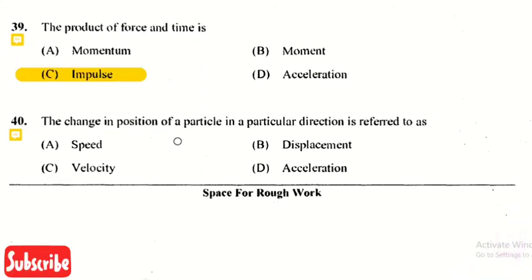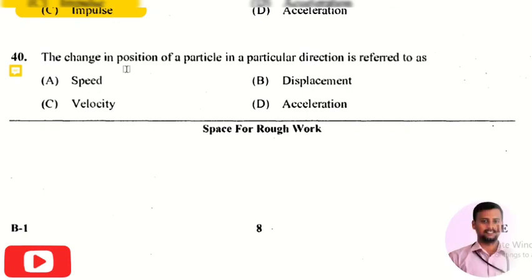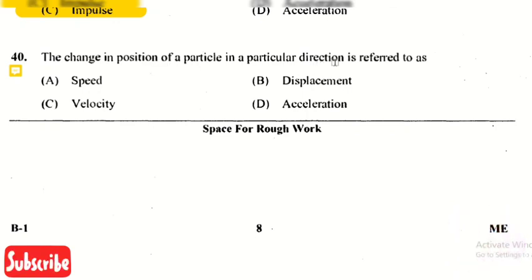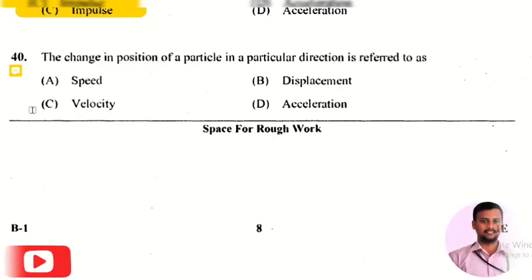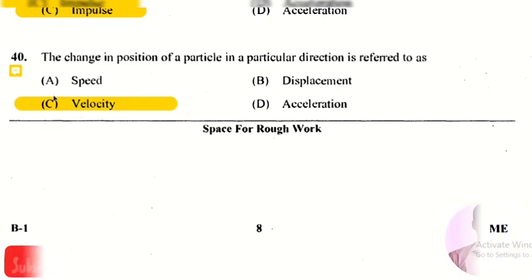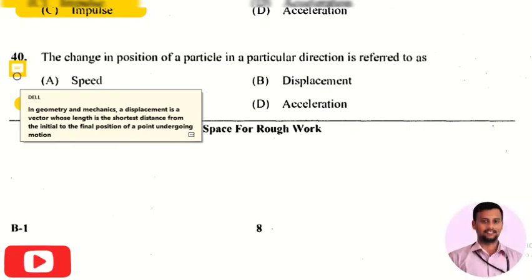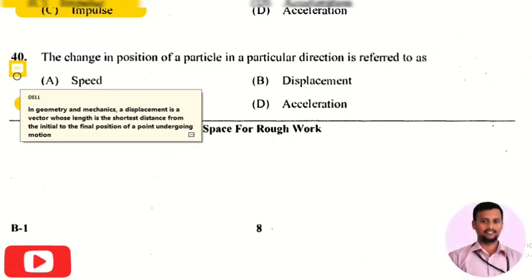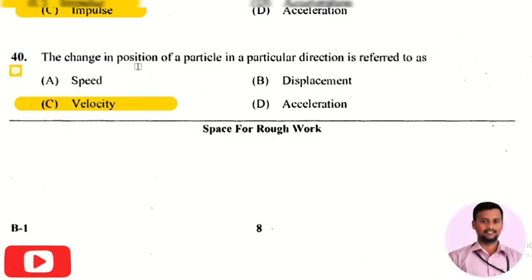The last question in the applied science section is: the change in the position of a particle in a particular direction is referred to as — the right answer is option 2, that is velocity. In geometry and mechanics, displacement is a vector whose length is the shortest distance from the initial to final position of a point undergoing motion, and the change in position in a particular direction is referred to as velocity.